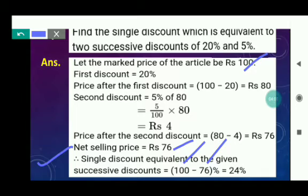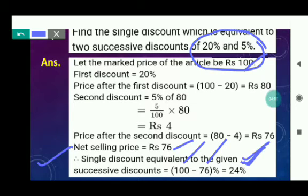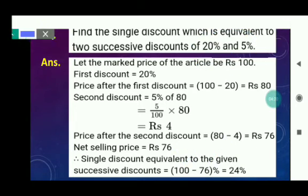The article worth Rs. 100 is now sold for Rs. 76 after both discounts. The equivalent single discount = 100 minus 76 = 24%. So instead of giving both discounts, a single discount of 24% can be given to achieve the same selling price.